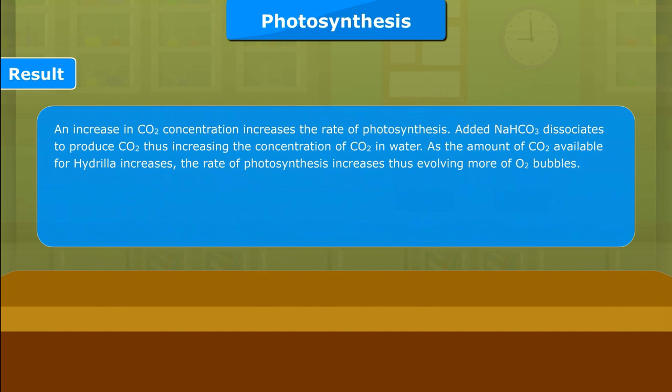Result: An increase in CO2 concentration increases the rate of photosynthesis. Added NaHCO3 dissociates to produce CO2, thus increasing the concentration of CO2 in water. As the amount of CO2 available for hydrilla increases, the rate of photosynthesis increases, thus evolving more O2 bubbles.